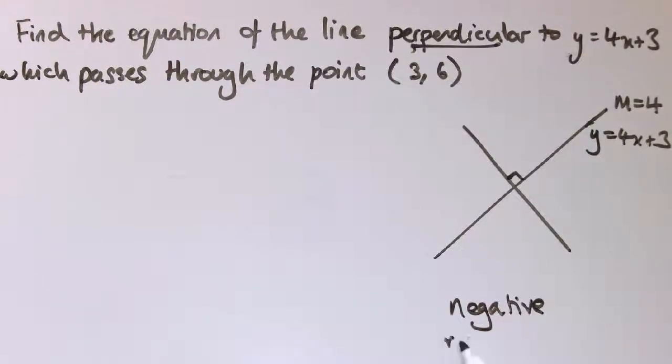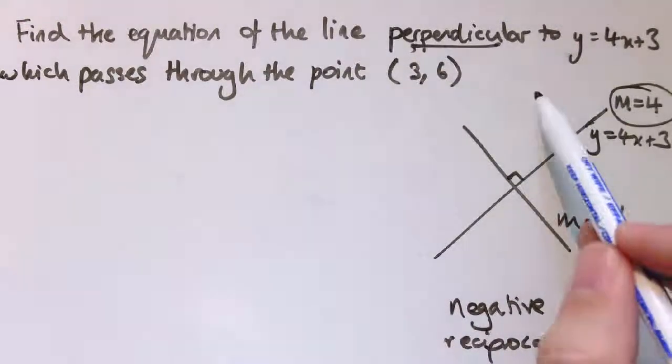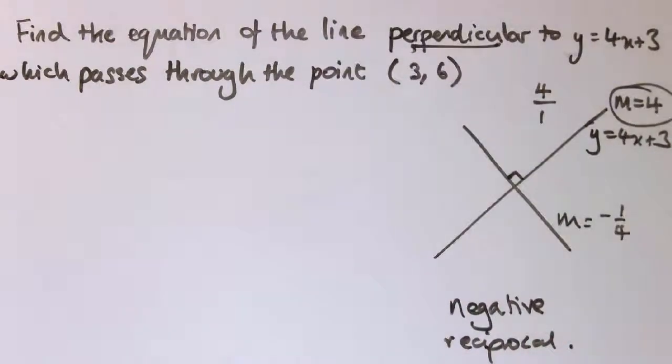So there's two parts of this: negative and reciprocal. I need to make this negative, so that means make it minus 4, and take the reciprocal, which means do 1 divided by it. So this would be m equals minus 1/4. So it's almost like I'm taking this thing, thinking of it as a fraction 4 over 1, turning it upside down and making it negative.